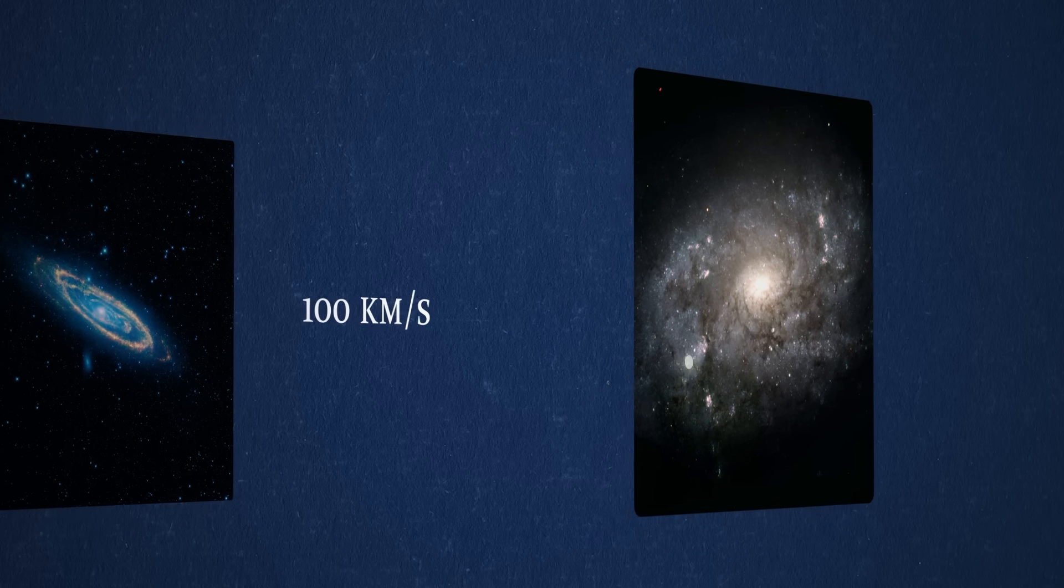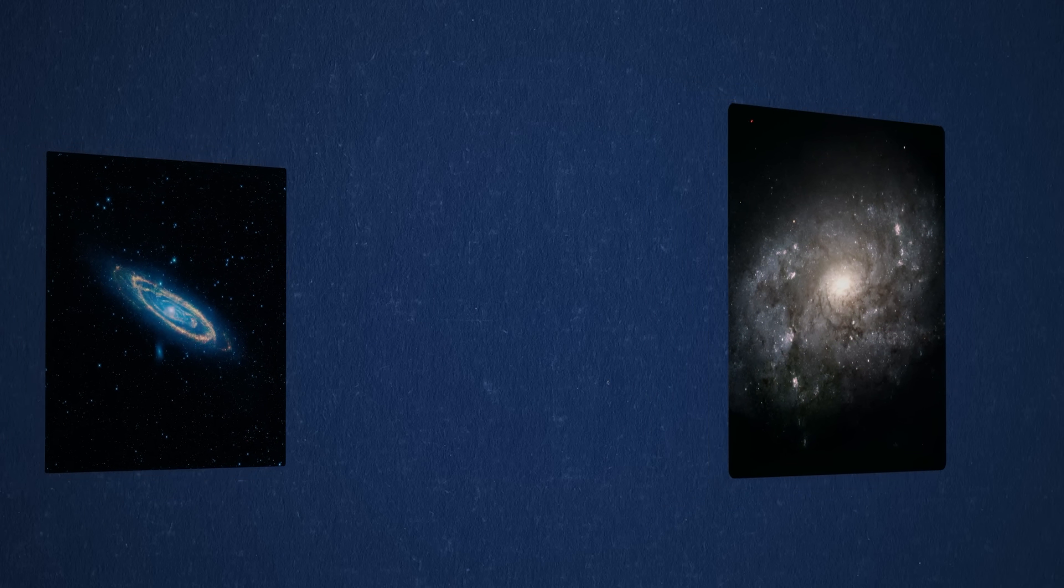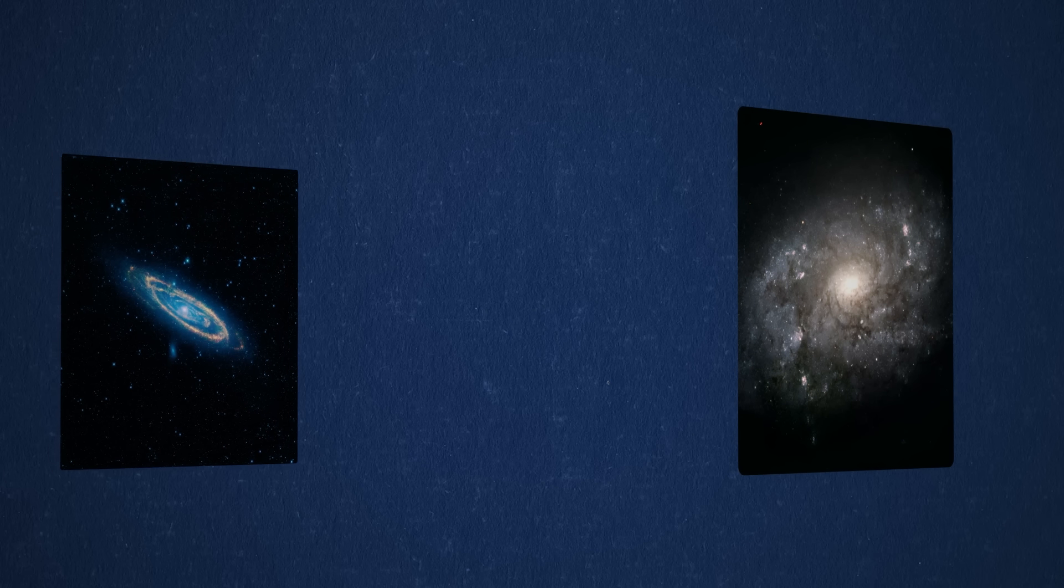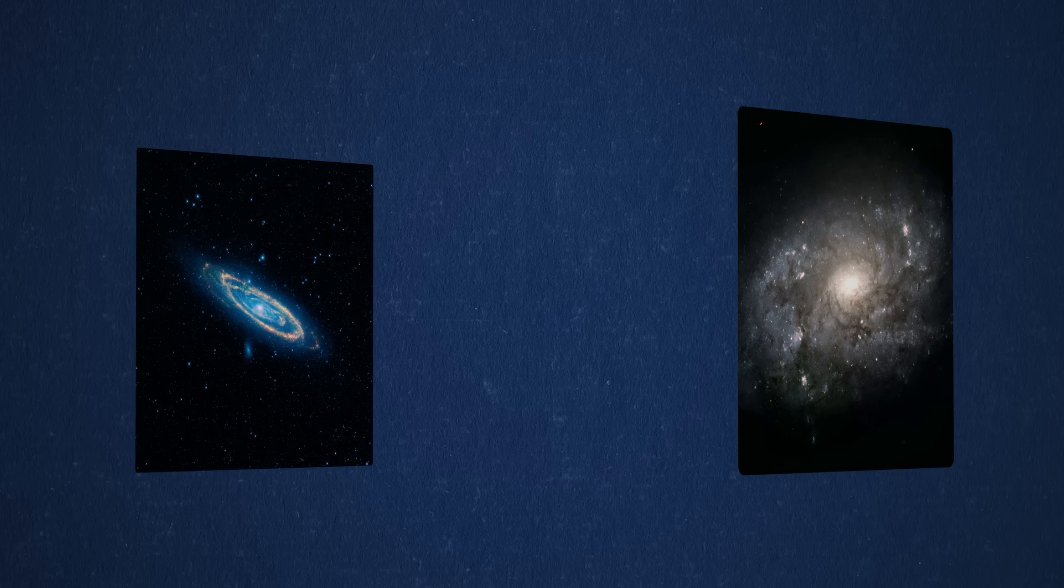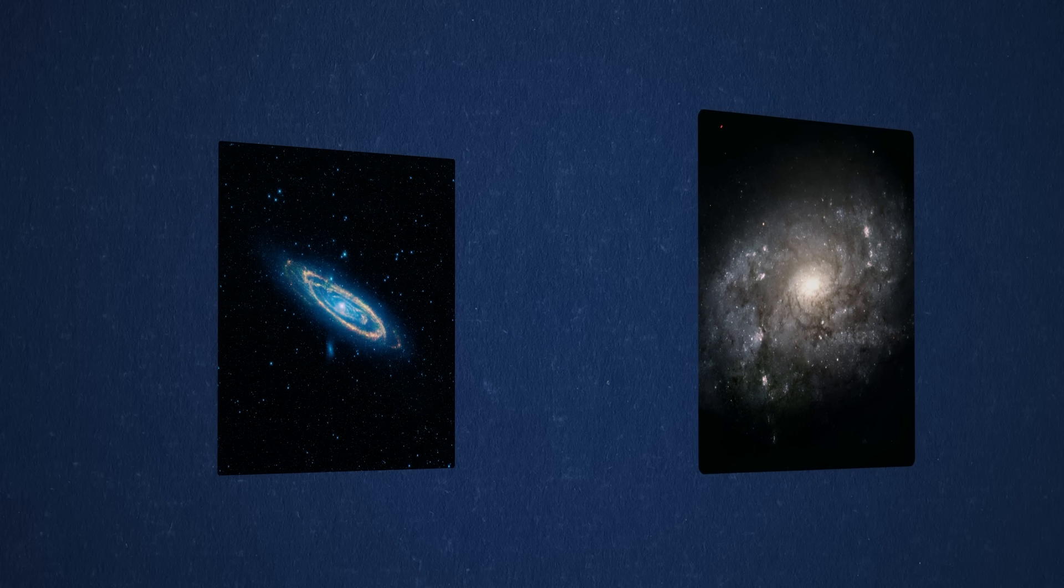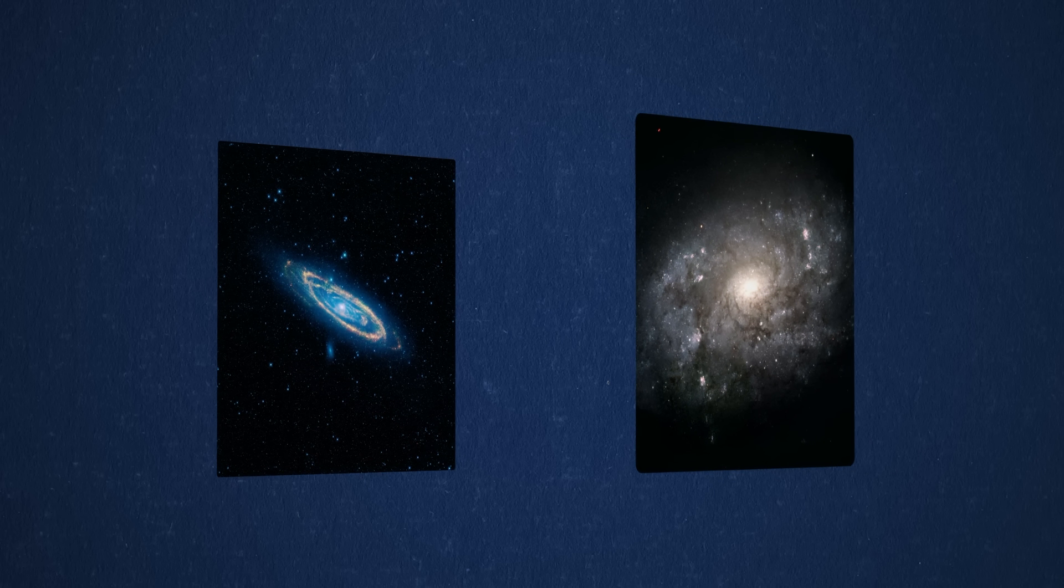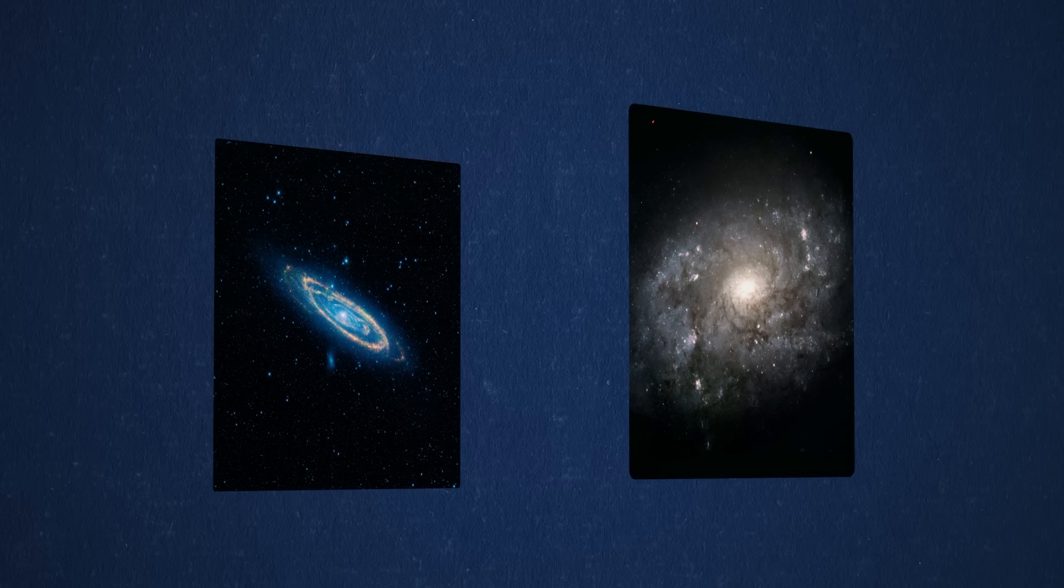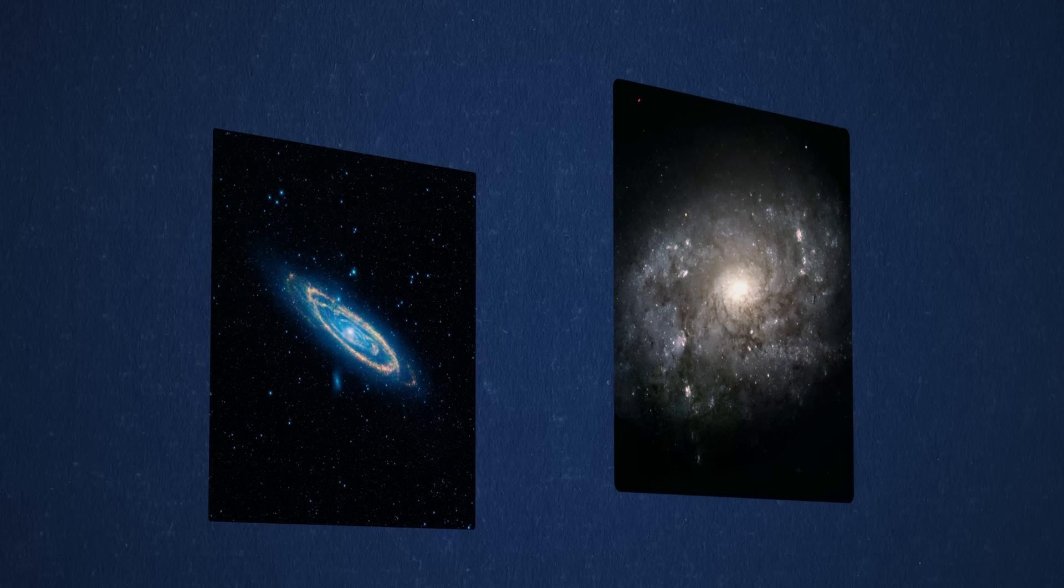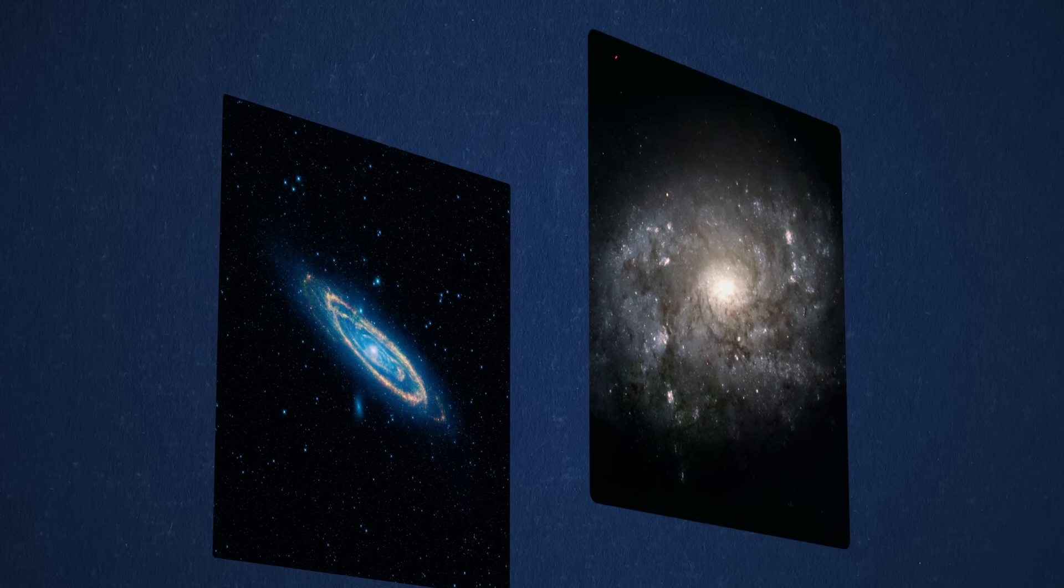But of course, now that we know the number, there is freedom to choose the frame of reference. We could say that the Milky Way is still, and that Andromeda is racing towards us, or that the Milky Way is rushing towards it at a great speed. But in the frame of reference that respects the expansion of the universe, our two galaxies are actually both moving towards each other, heading towards a common gravitational center.